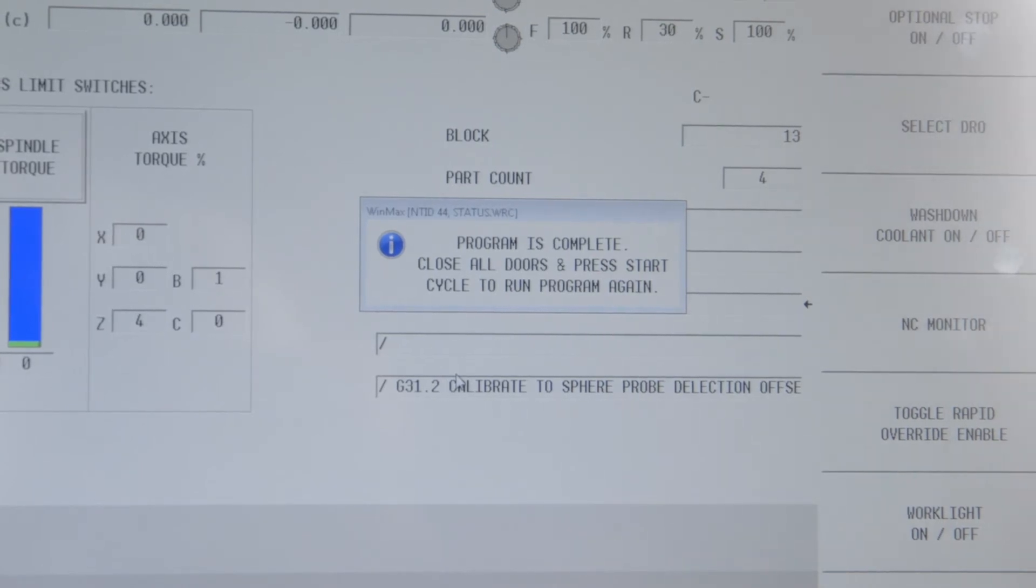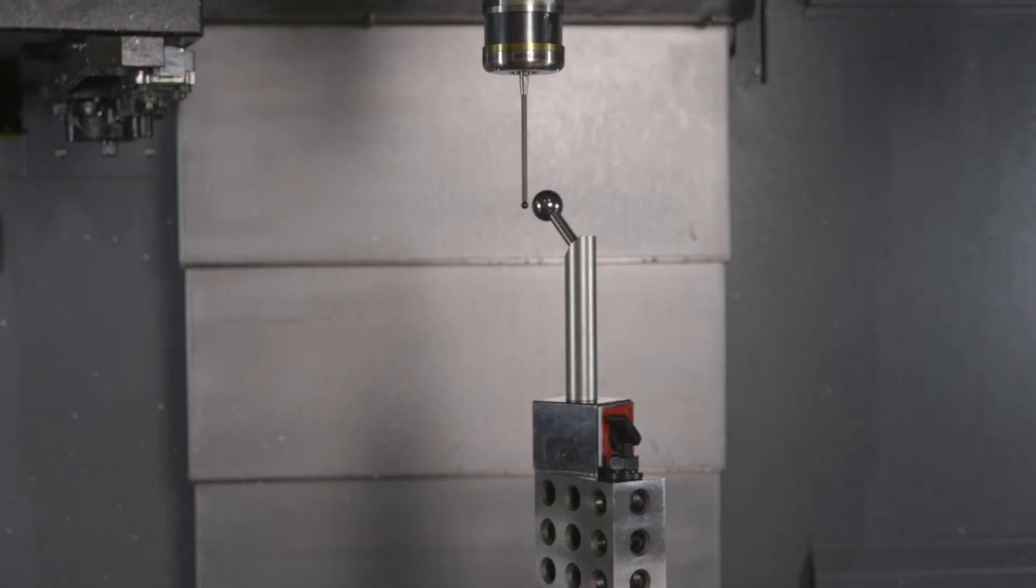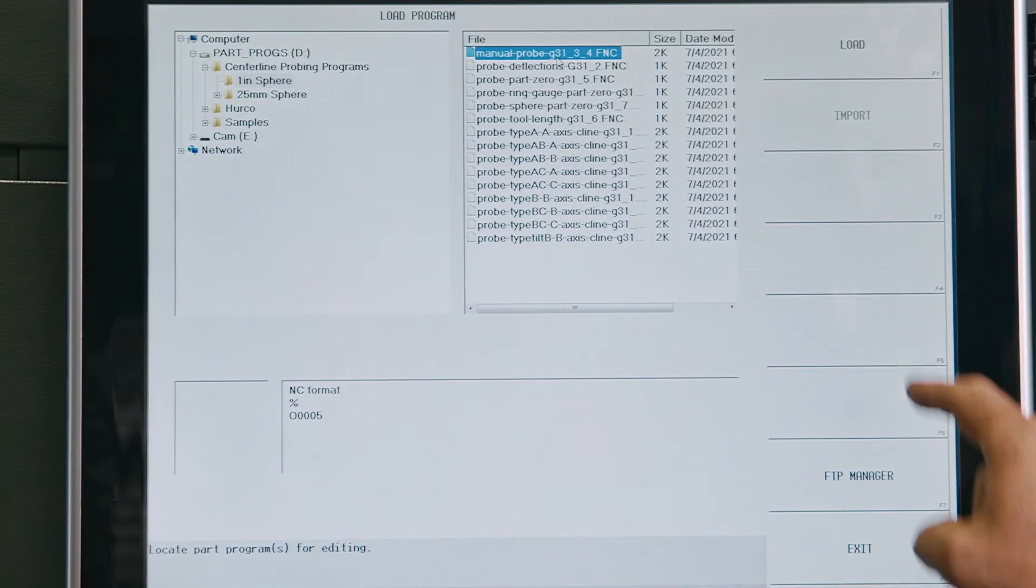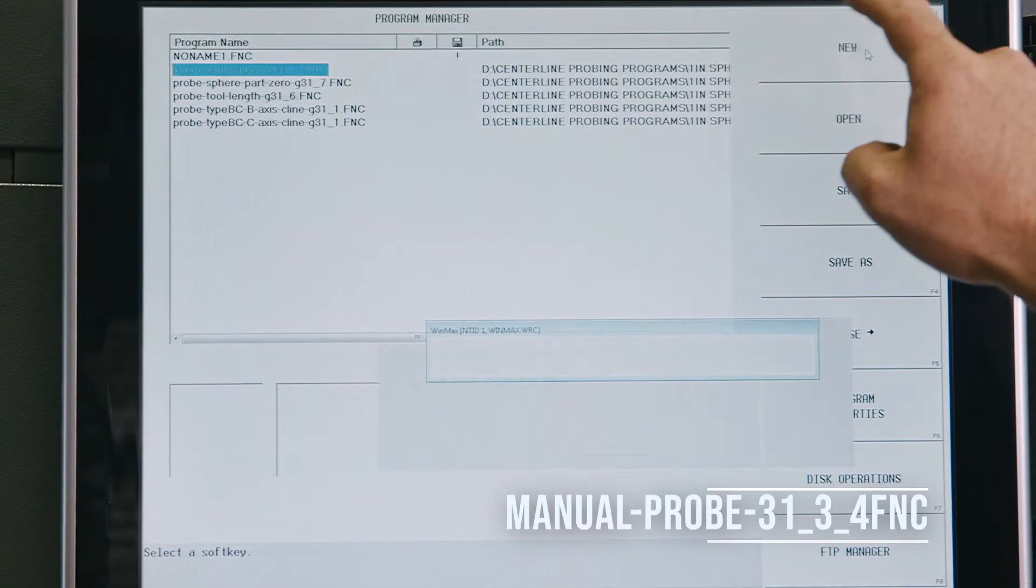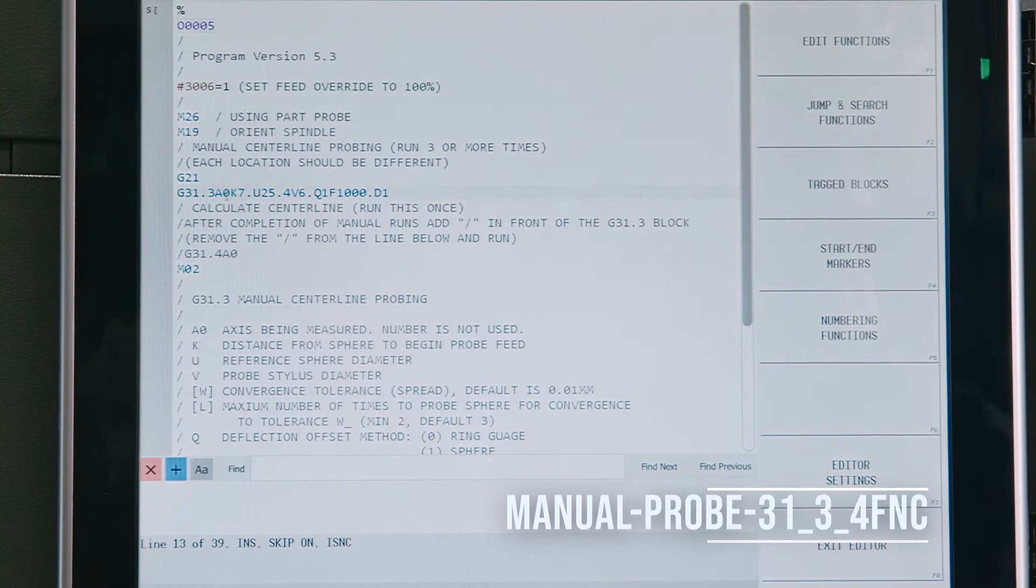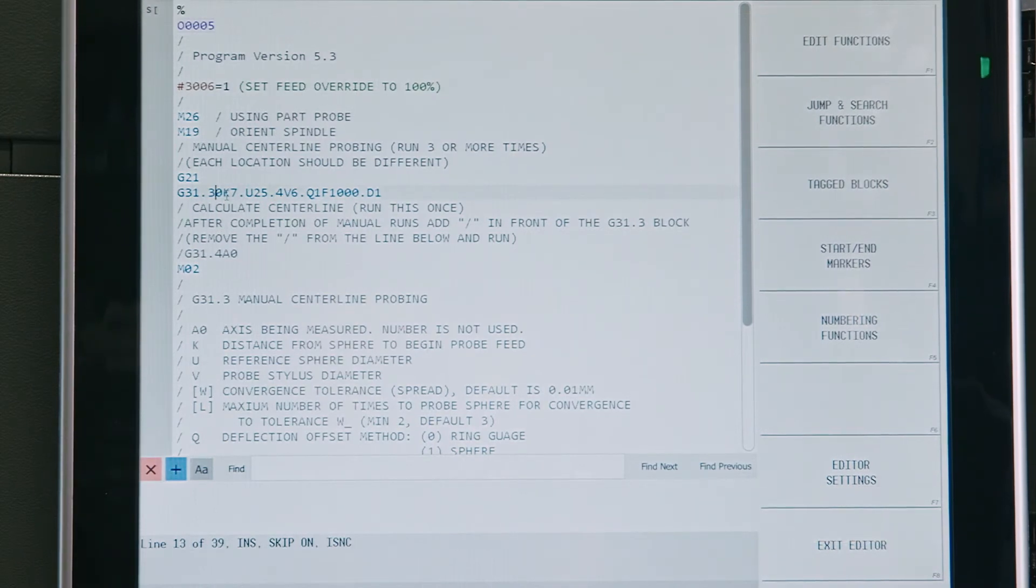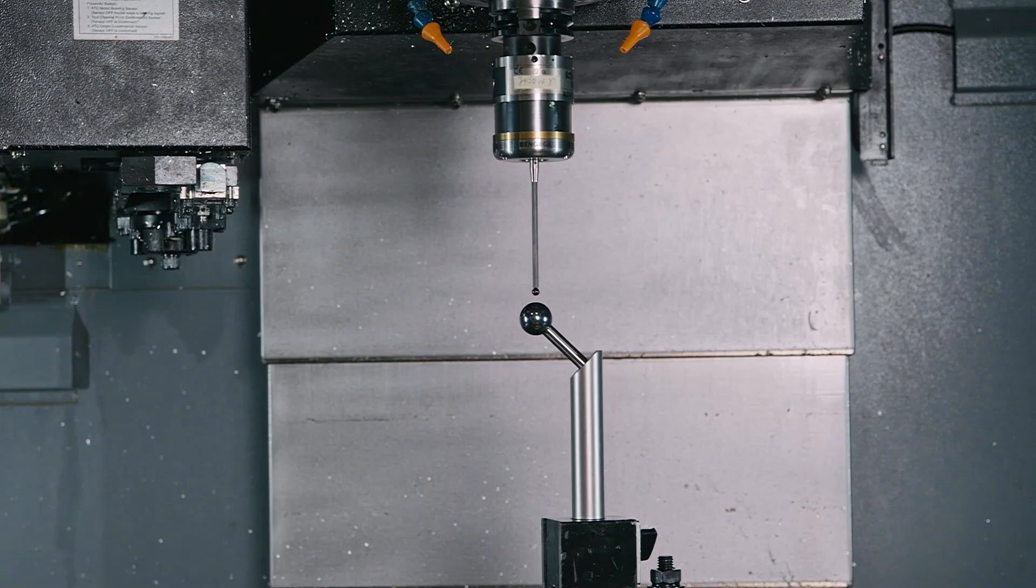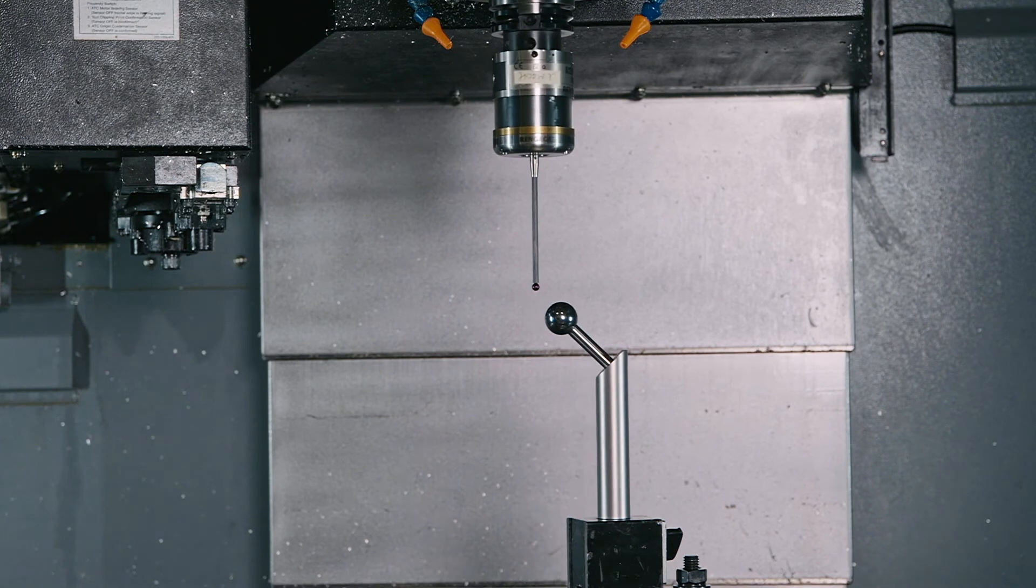If center lines are unknown or over a millimeter out, we follow the manual procedure by first loading program manual probe G31-3-4 FNC. Change the axis in both G31 lines to the axis you want to probe. Manually position the probe about a quarter inch from the sphere and run the program.